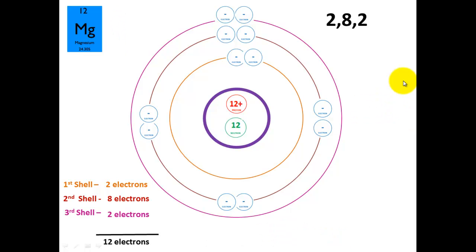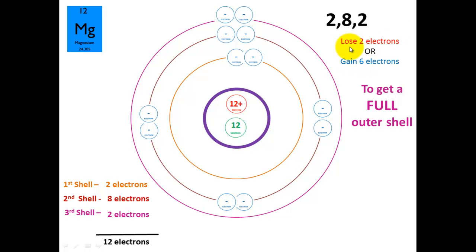To get a full outer shell, this atom can do one of two things: it can either lose 2 electrons or it can gain 6 electrons. Atoms are lazy and want to use as little energy as possible, so it's a lot easier to lose 2 electrons than to gain 6, and that's exactly what magnesium will do given the opportunity.